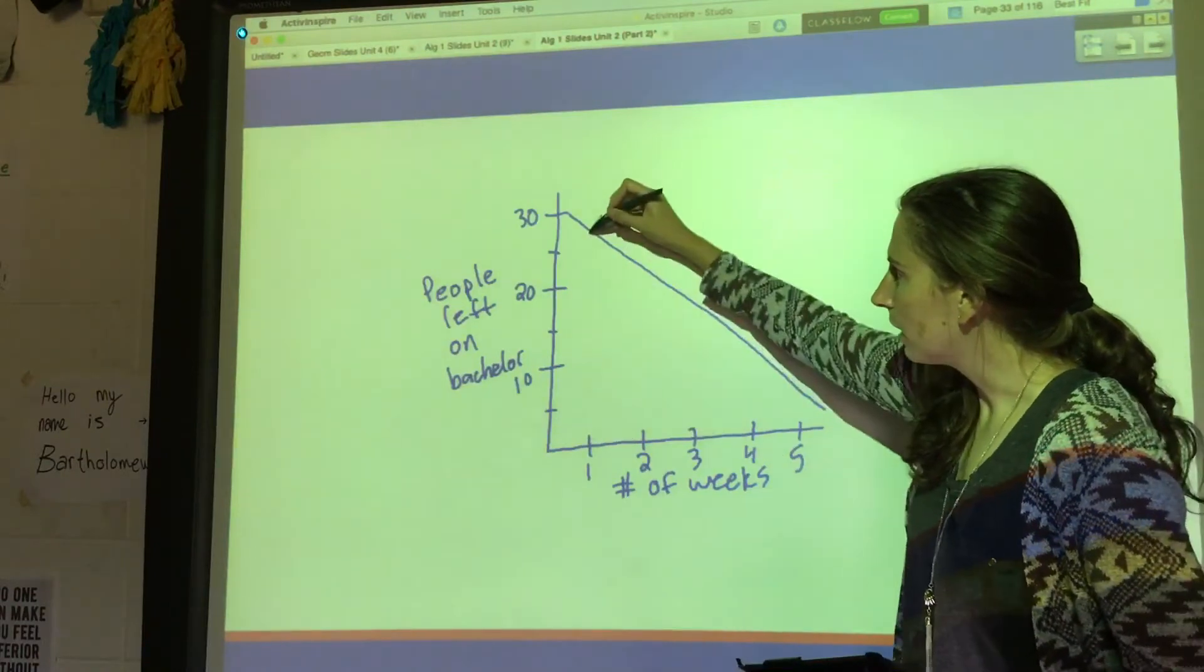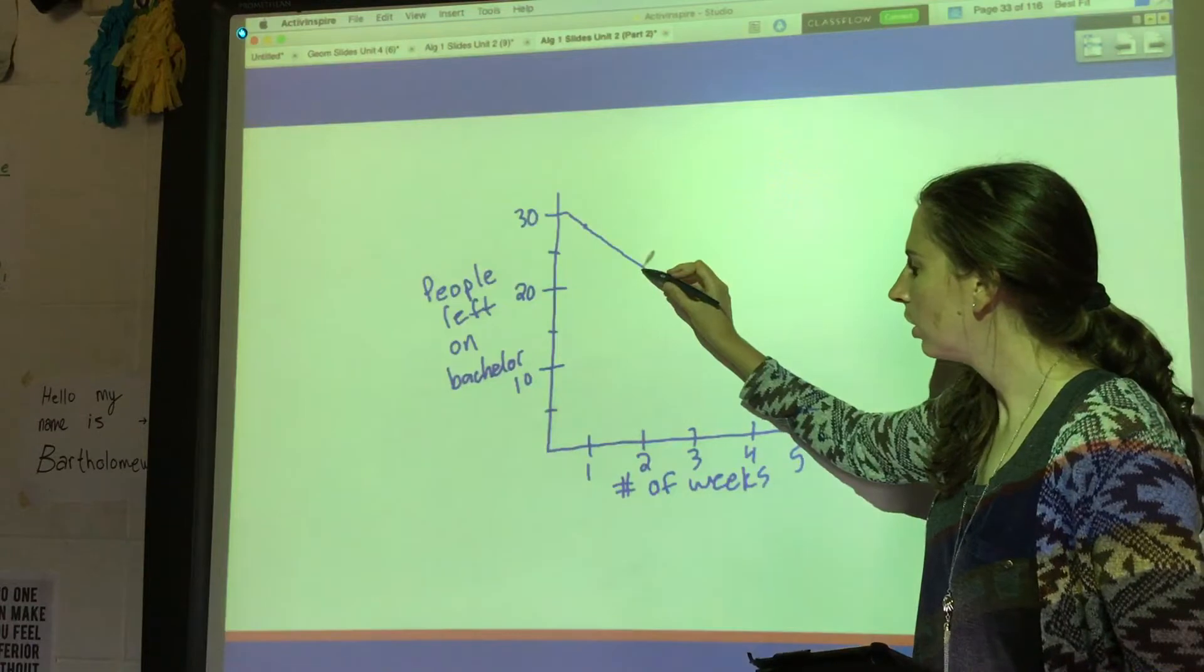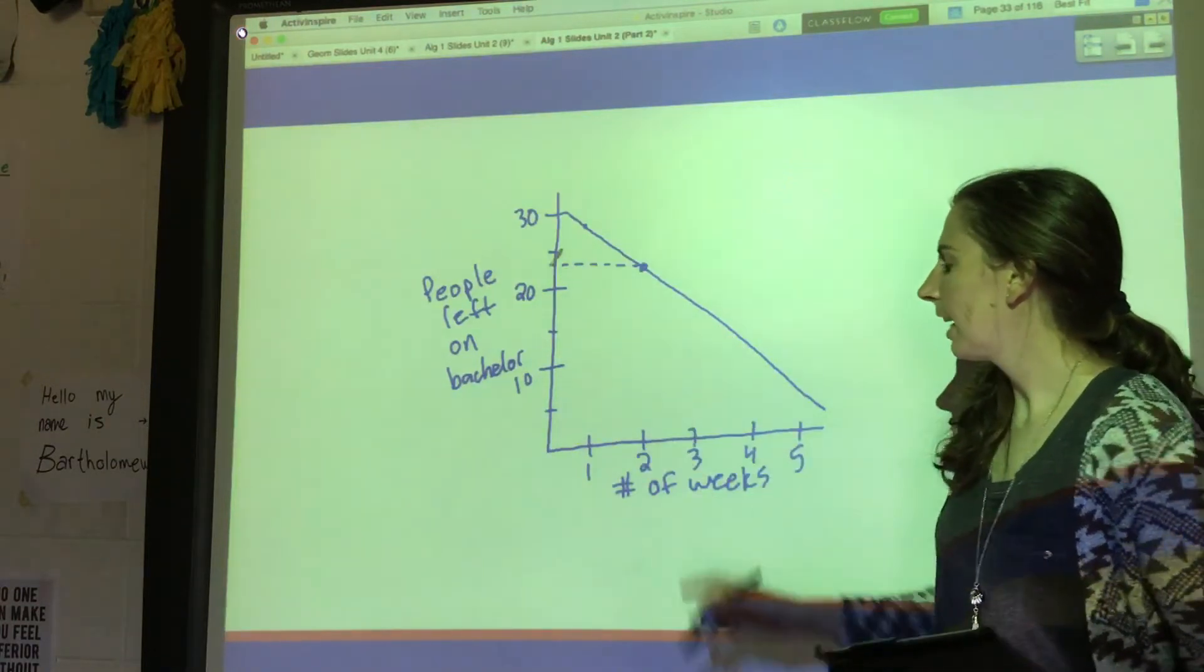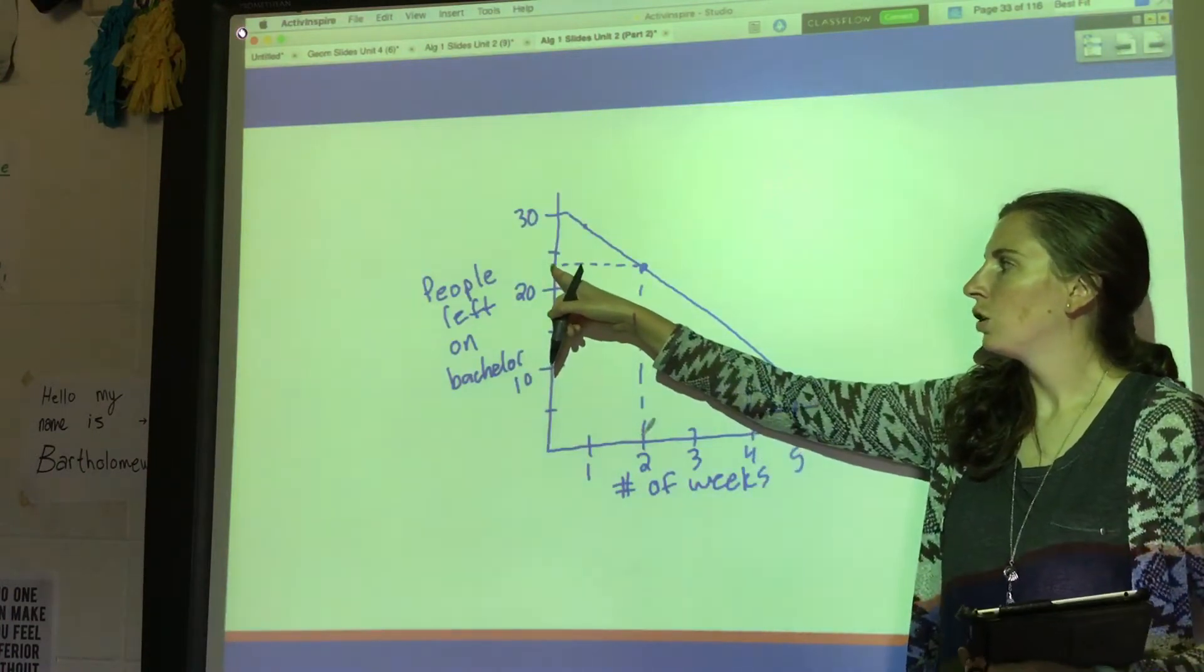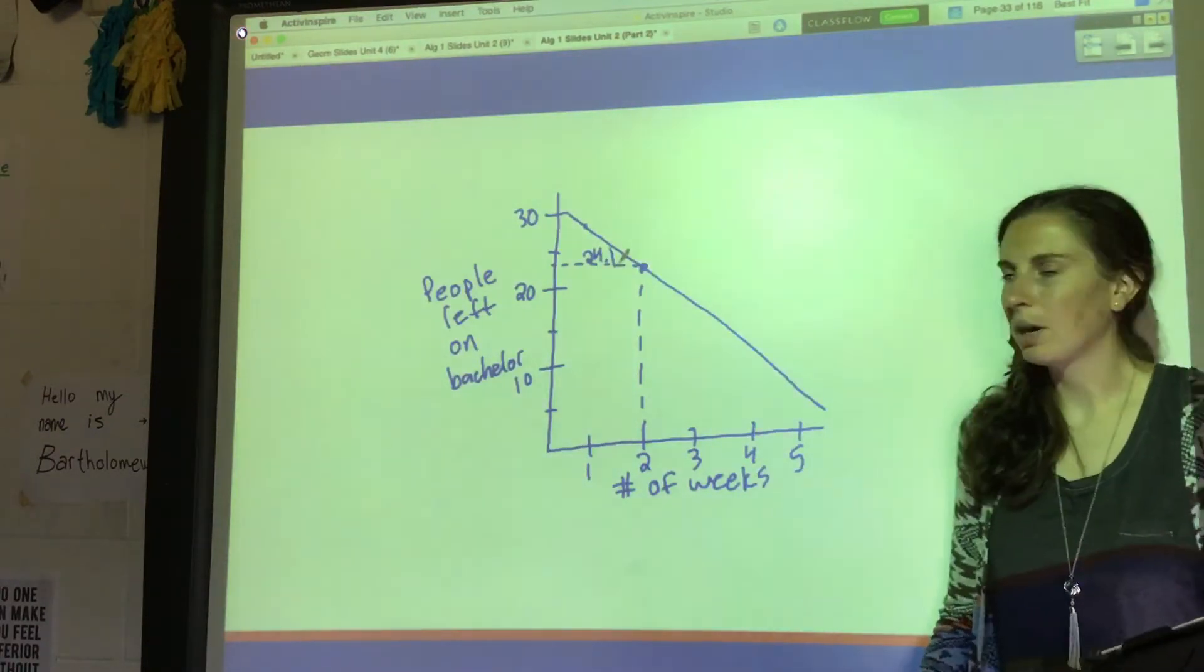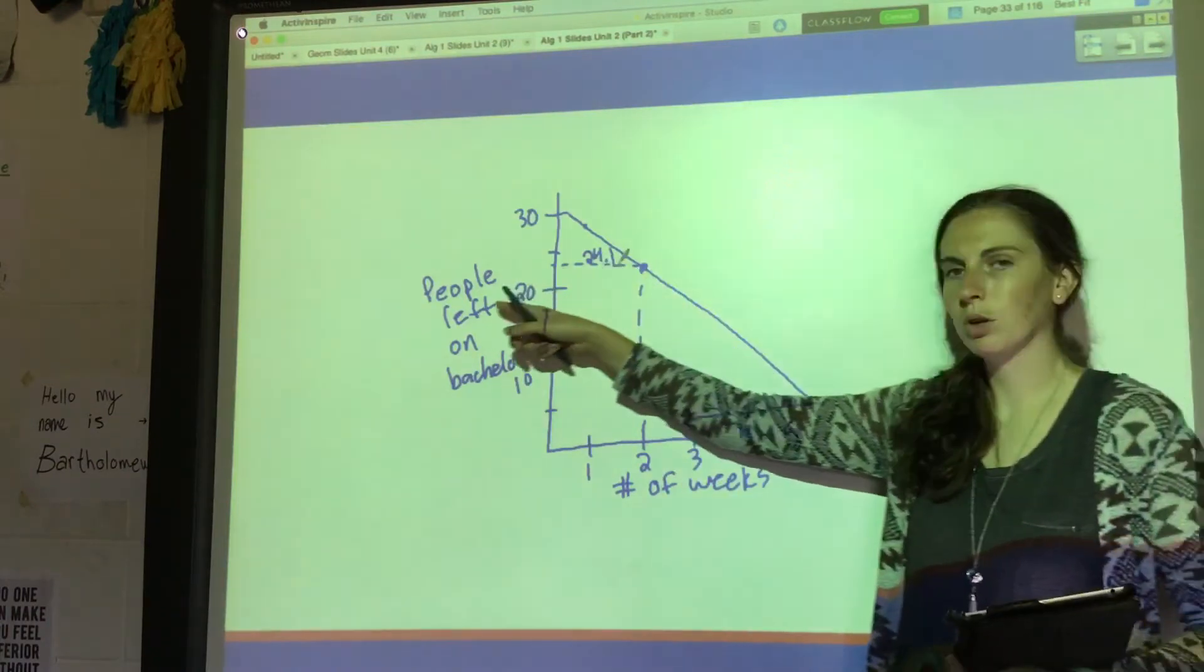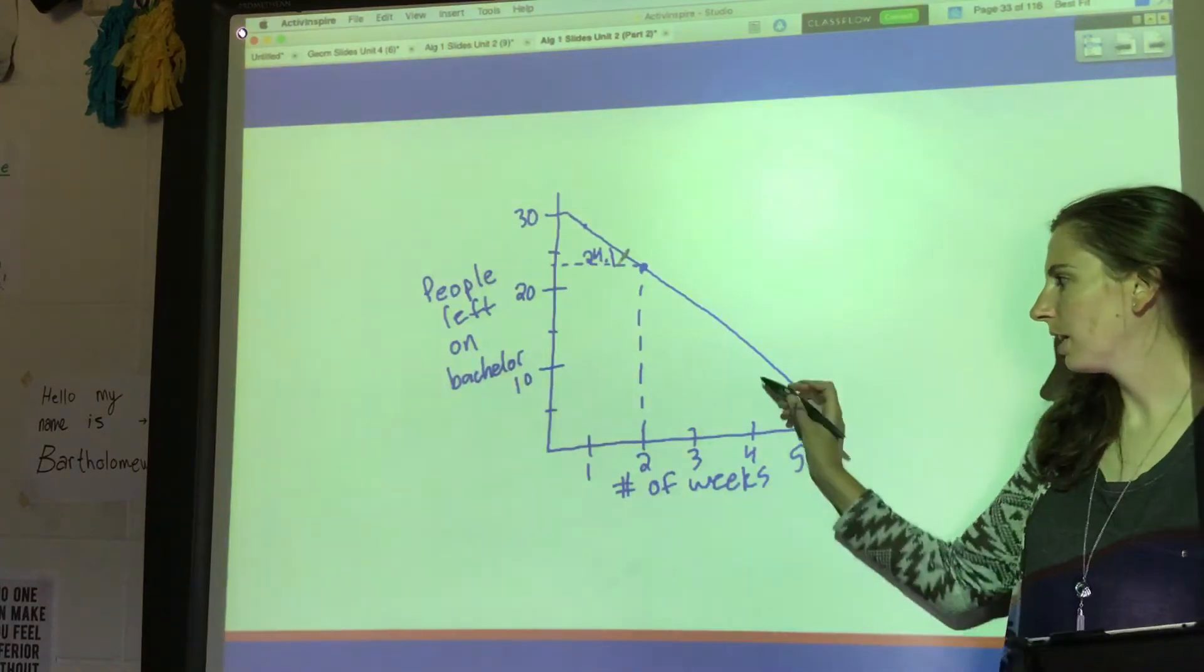and then on week two we're down to, I don't know what exactly that is, but let's say that this is 24.1. Is it possible to get an output of 24.1 people left on the Bachelor, or is it possible to get an output of like 8.7 people left on the Bachelor?